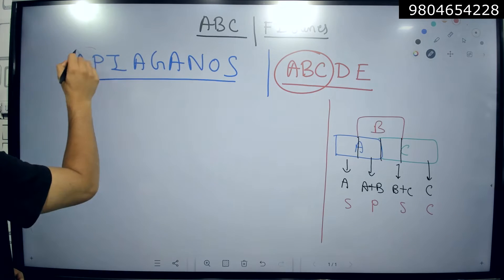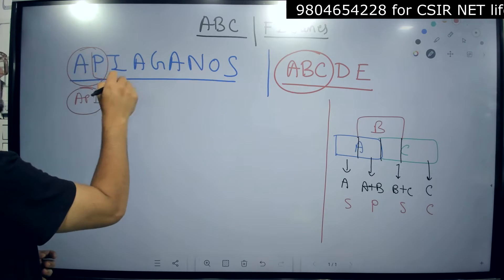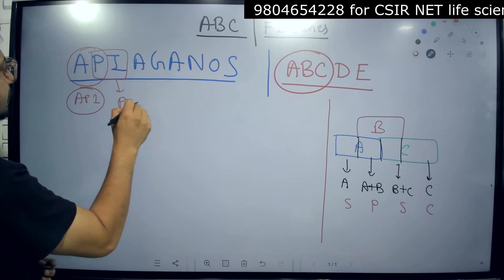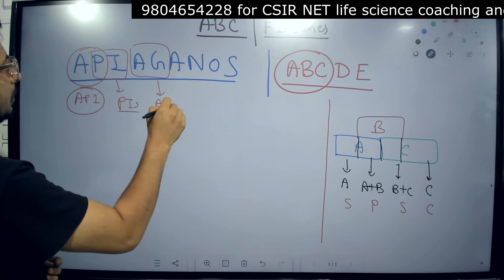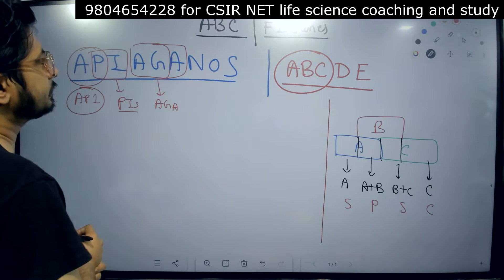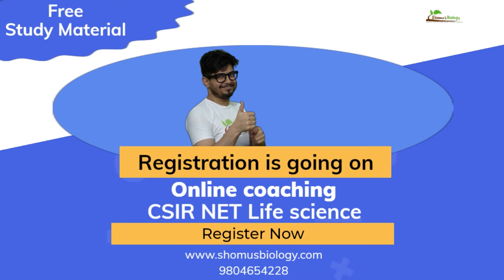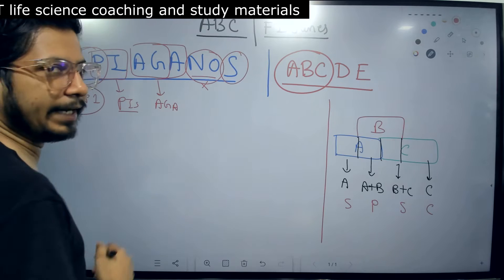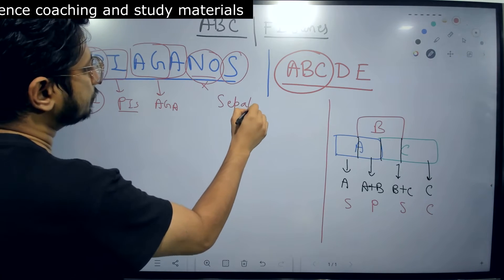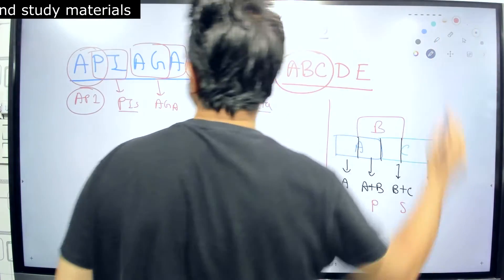For that we have this APIAGANOS, this particular term for you. Where we have AP, this is AP1. Then the second one is PI, this is Pistillata. Then third one is Agamos, then we have two more: NO, and this is nothing, so NO means no, there is no particular genes there, and Sepallata at the end.